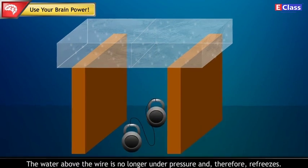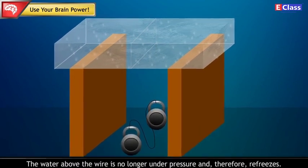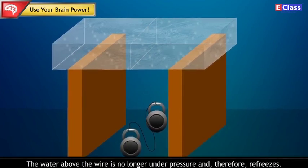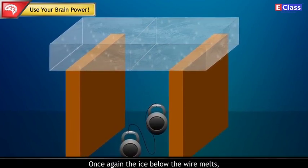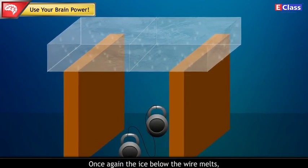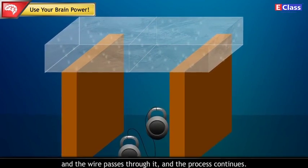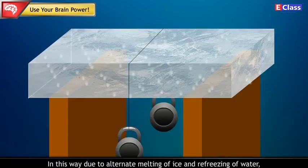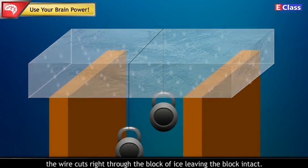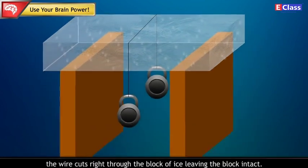The water above the wire is no longer under pressure and therefore refreezes. Once again, the ice below the wire melts and the wire passes through it and the process continues. In this way, due to alternate melting of ice and refreezing of water, the wire cuts right through the block of ice, leaving the block intact.